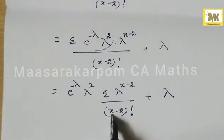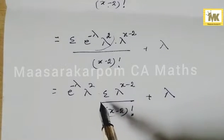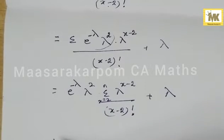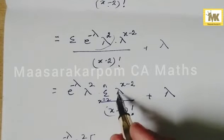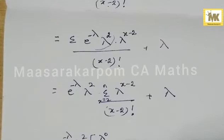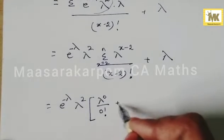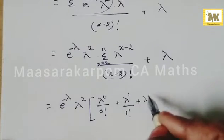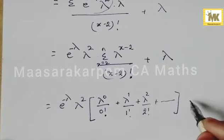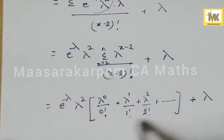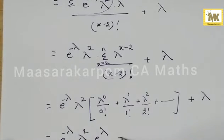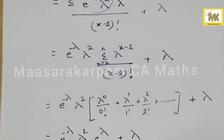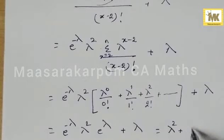The summation now runs from x=2 to n, since we need x-2 ≥ 0 to avoid undefined negative factorials. Expanding: x=2 gives λ^0/0!, x=3 gives λ^1/1!, x=4 gives λ^2/2!, and so on. So we have e^{-λ} · λ² · (1 + λ + λ²/2! + λ³/3! + ...) + λ. This exponential series gives e^λ, and e^{-λ} · e^λ cancels, leaving E[X²] = λ² + λ.